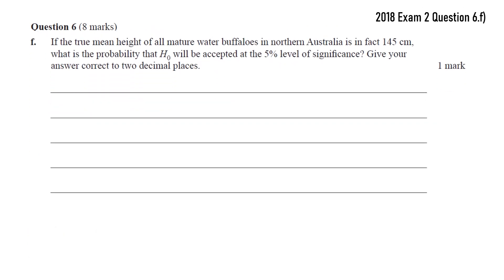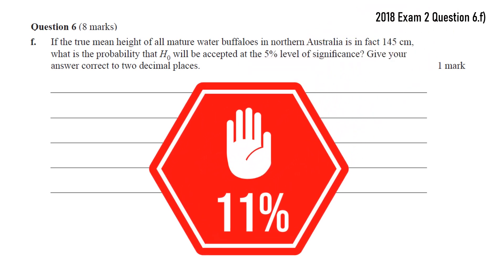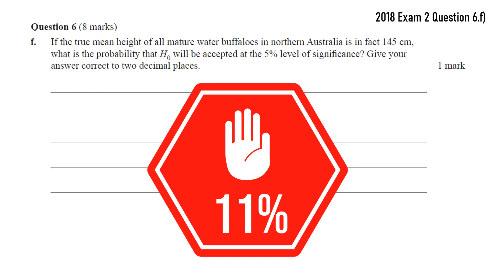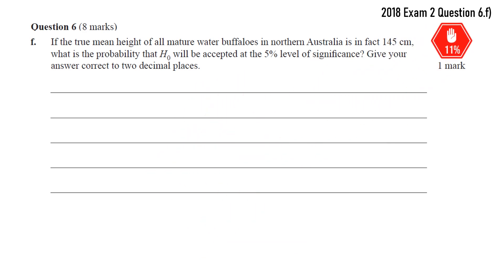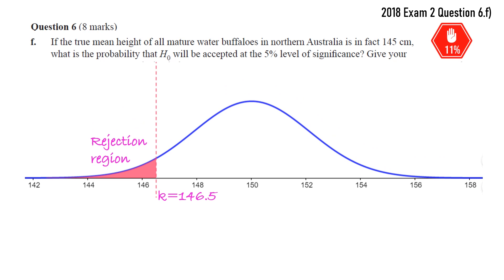Okay, part F, the one you've been waiting for. If the true mean height of all buffaloes is in fact 145, what is the probability that H0 will be accepted? So the null hypothesis is false, but we're accepting H0. So it's a type 2 error question, and only 11% of students got this. To be fair, it was the last question on a long exam paper, but anyway, so from the previous question, we know that we would reject H0 if we were less than 146.5. Okay, if we were in the rejection region, which is in the bottom 5%.